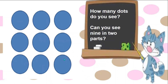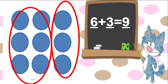How many dots are on this card? Can you see it in two parts? I saw a group of six dots and a group of three dots. Six and three is nine.